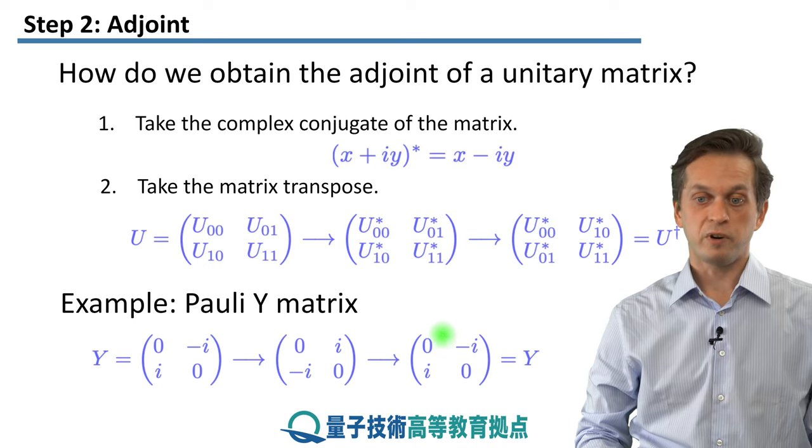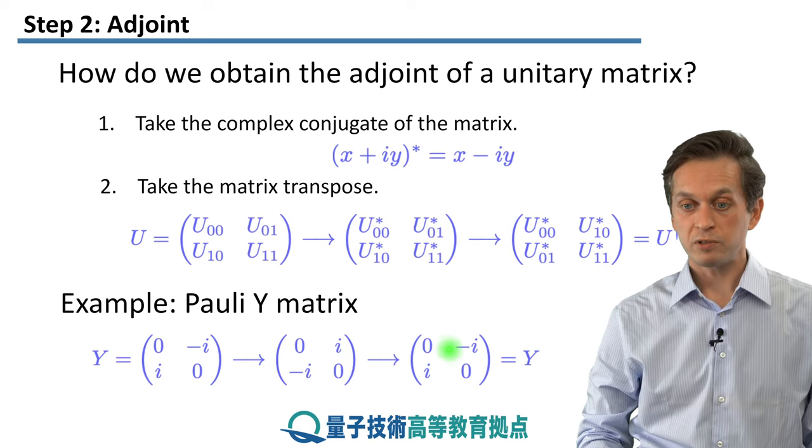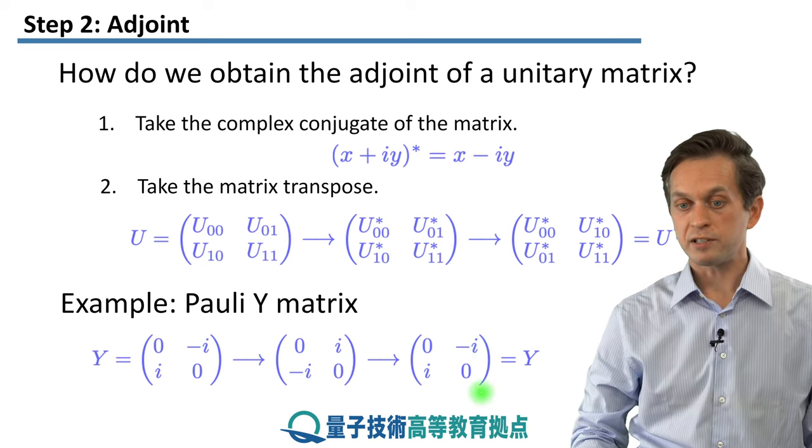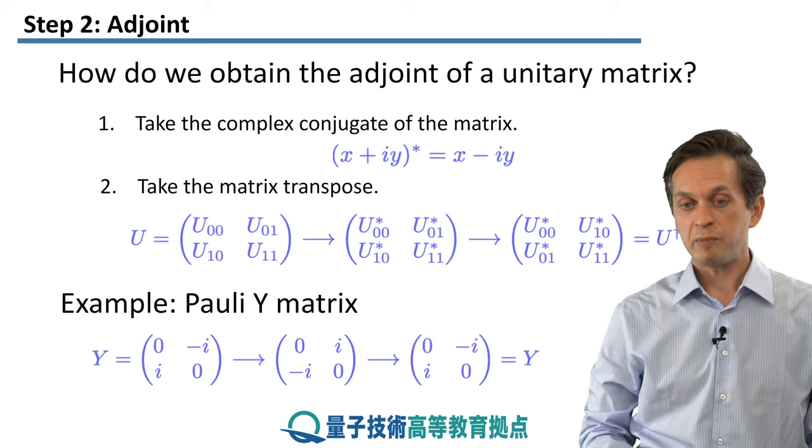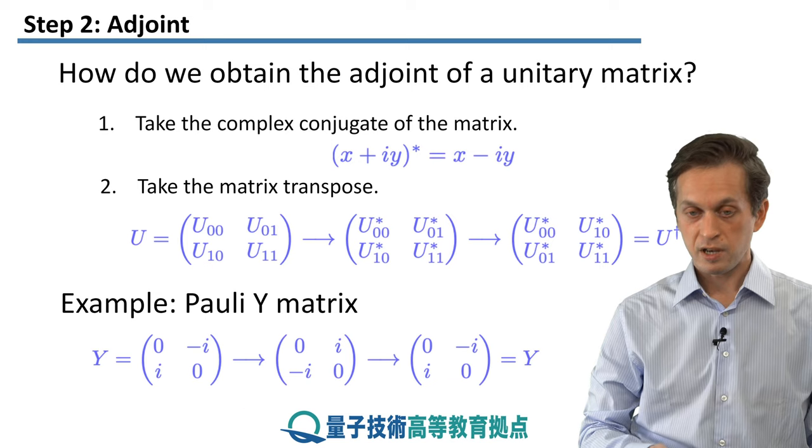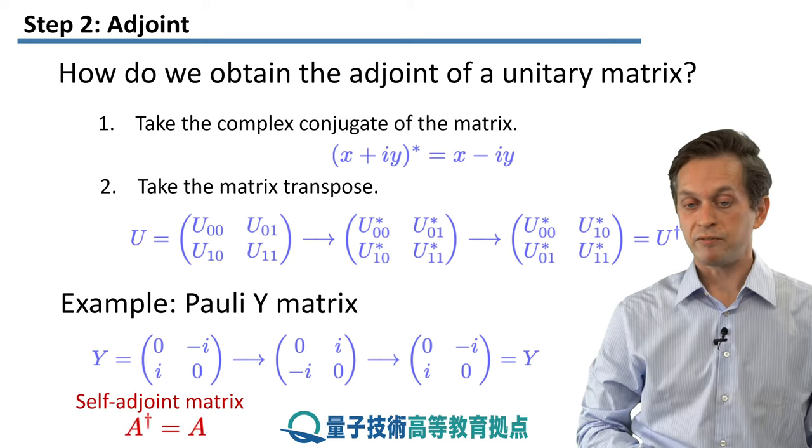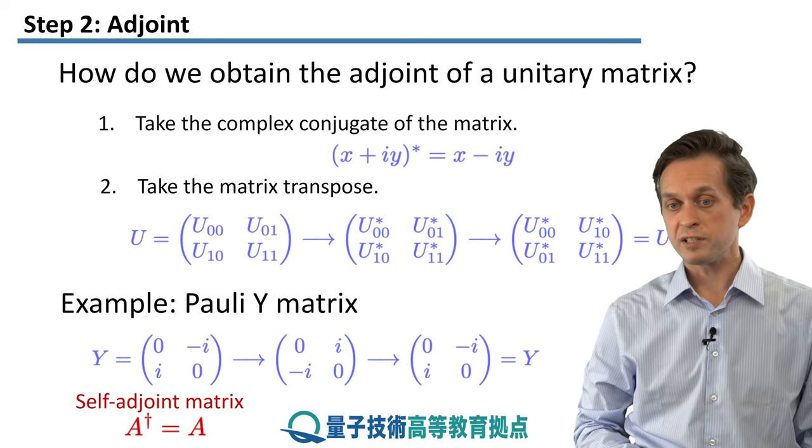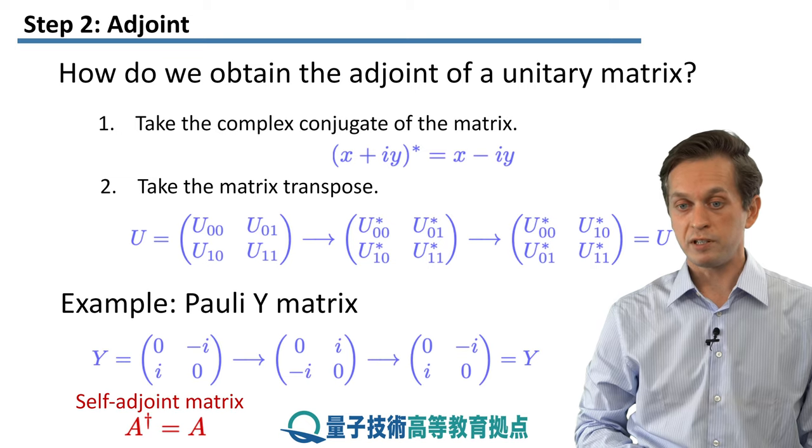And then we flip them, because we are applying the transpose, and we get the same matrix Y. When this happens, when the adjoint of a unitary matrix is equal to the unitary matrix, we say that that matrix is self-adjoint. And we will see many examples where this is in fact true.